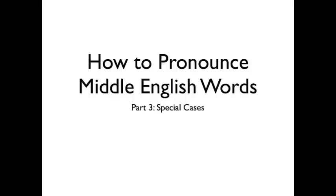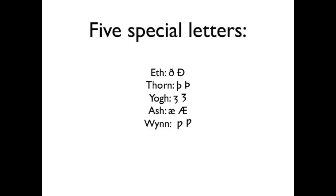Hi again, YouTube. It's ThatOneGuyInLitClass, here today to finish talking about Middle English pronunciation by throwing some knowledge your way about some special characters — pun intended — in Middle English. Brief overview of what we're going to be covering: we're going to be examining five things today — the F, the Thorn, the Yogh, the Ash, and the Wynn. Yes, Middle English had a letter called Wynn. We'll get to it shortly.